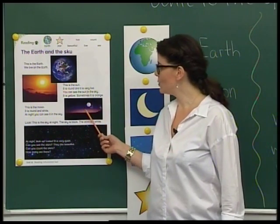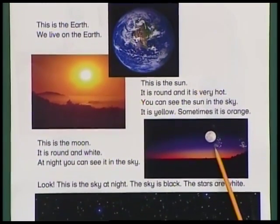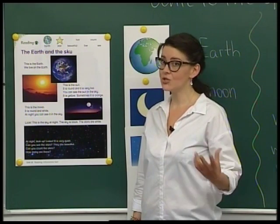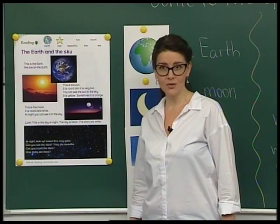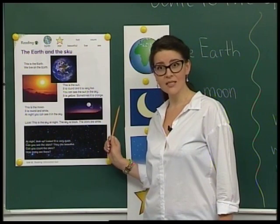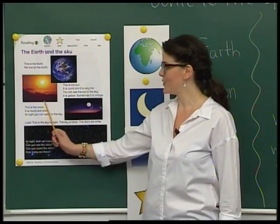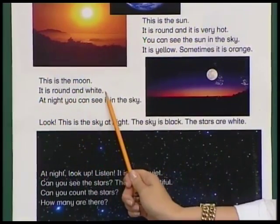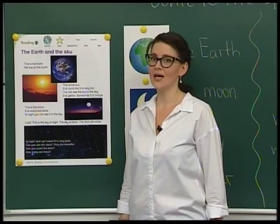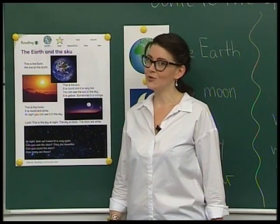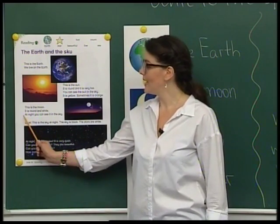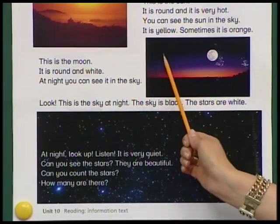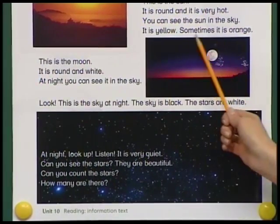And now please look at the Moon. This is the Moon. It is round and it is white. The Sun is round but it is yellow. The Moon is round too — it is white. Let's read this sentence: This is the Moon. It is round and white. At night you can see it in the sky.